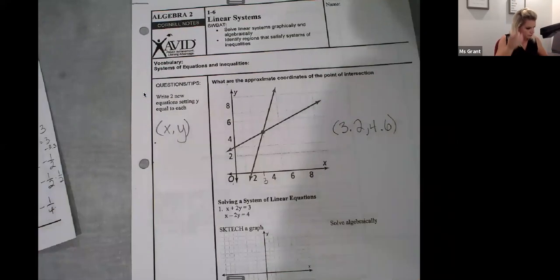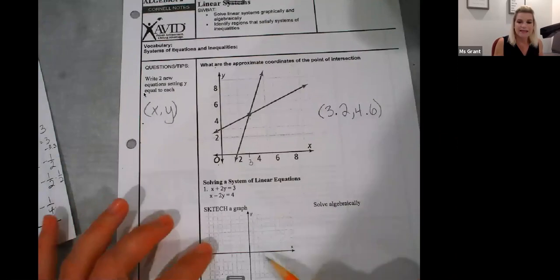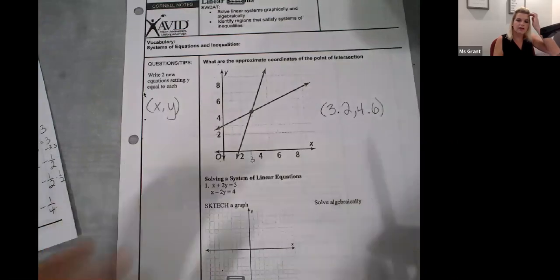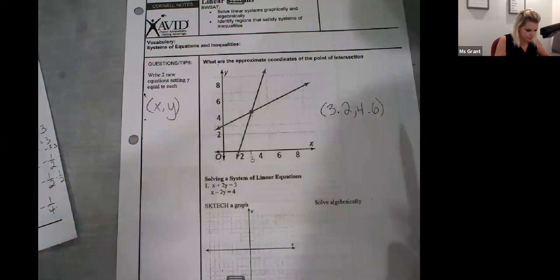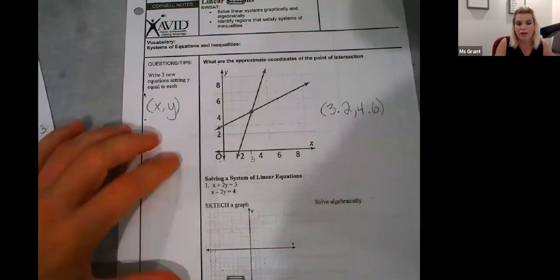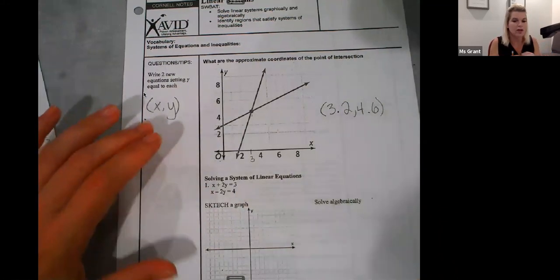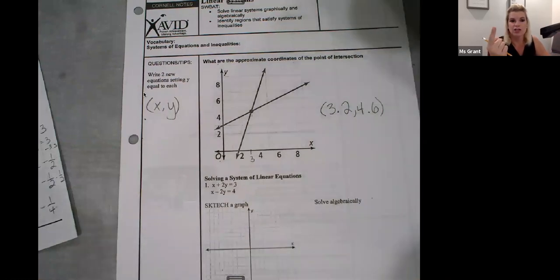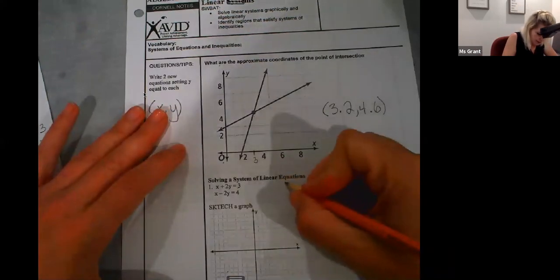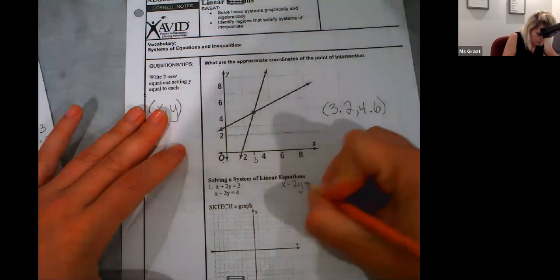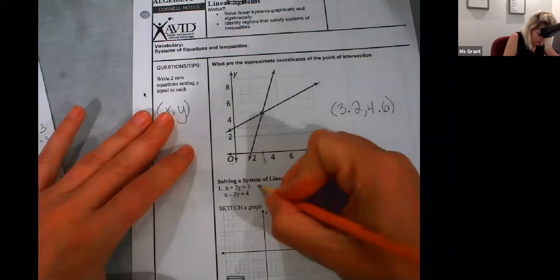Solving a system of linear equations. We need to sketch a graph, and then we need to solve algebraically. So, sketching a graph, you know, when we're given a graph, and it's in standard form, you can change it to Y equals MX plus B, or we can use intercepts. Find the X intercept, find the Y intercept. If I put the X minus 2Y equals 4 here, and I rewrite this one just so I have room.